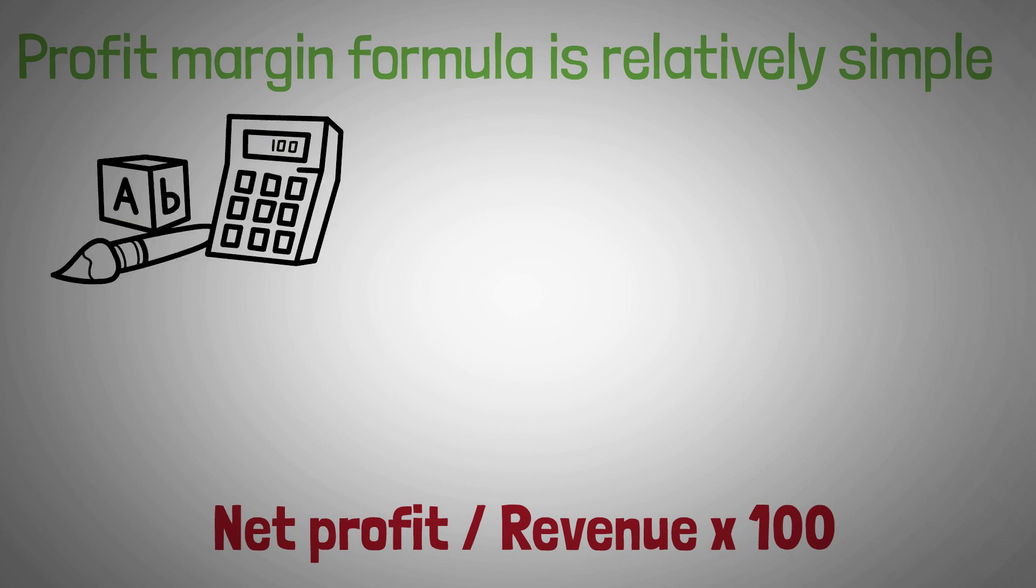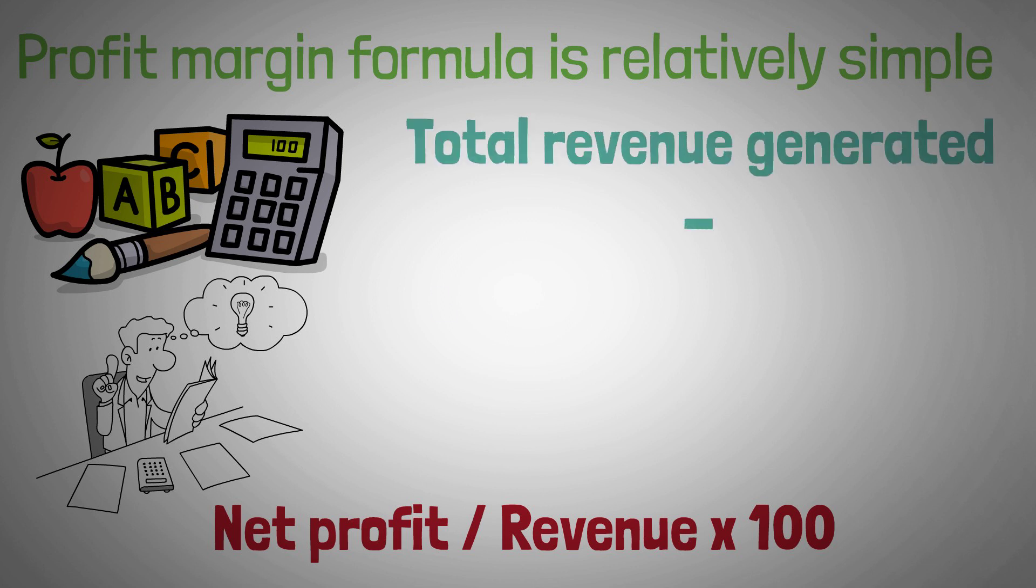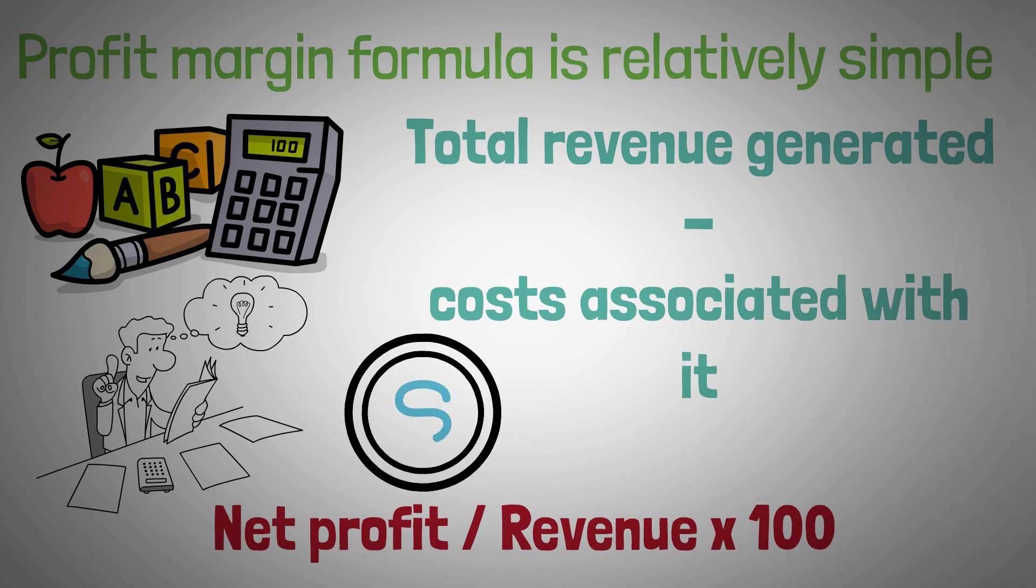To calculate the profit margin, you first need to determine the net profit of the business. This is the total revenue generated by the business minus all of the costs associated with it. Next, you need to determine the total revenue generated by the business.